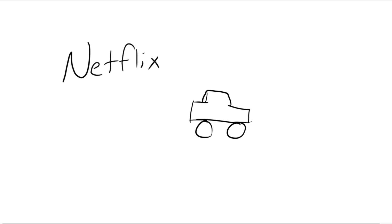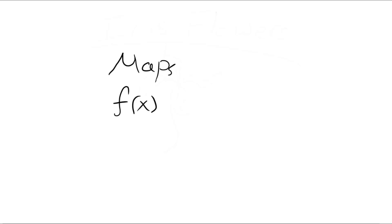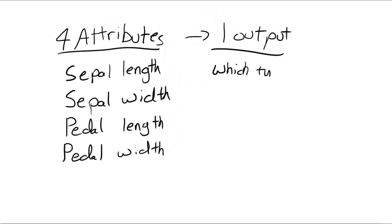For this tutorial, I'll be using several examples, but primarily classifying types of flowers using a neural network, because that's what we'll be implementing in code after this. At a very basic level, a neural network is a giant function — it maps an input x to some output y. In this case, we're mapping four different variables — the sepal width, sepal length, petal width, and petal length — to one output: which type of flower it is.